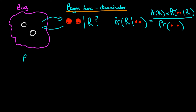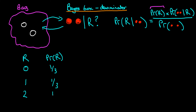We first start by listing the possible values of R. Before sampling from the bag, we suppose the number of red balls could be zero, one, or two — knowing there are only two balls in the bag. We then specify the prior probability for each value. Suppose that before drawing any balls, we consider each of these values equally probable, so we ascribe a probability of one third to R being zero, R being one, and R being two.